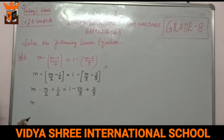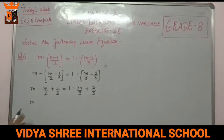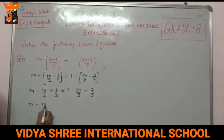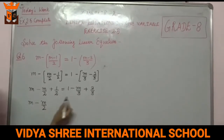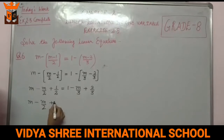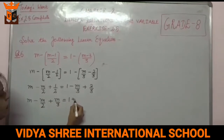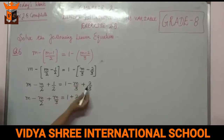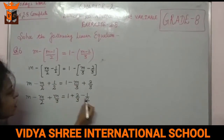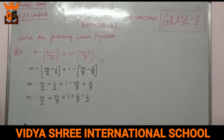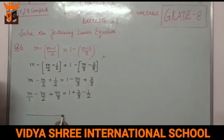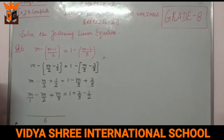Now collect all M variable terms on the left hand side. So M minus M/2 plus M/3 on the left. Numbers 1 plus 2/3 minus 1/2 on the right. The LCM of 1, 2, and 3 is 6.